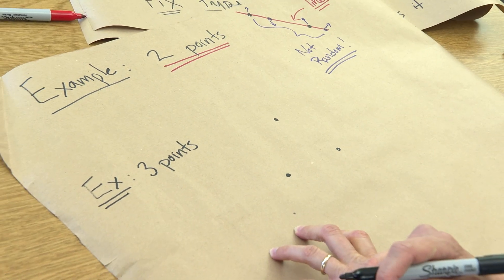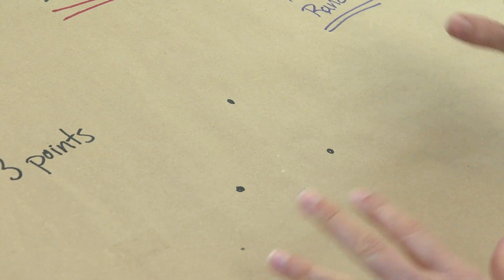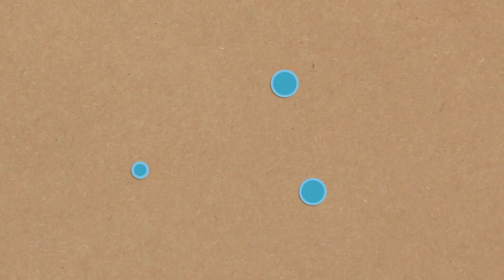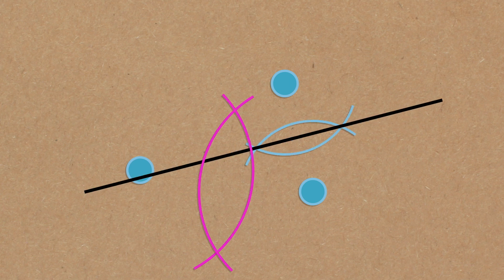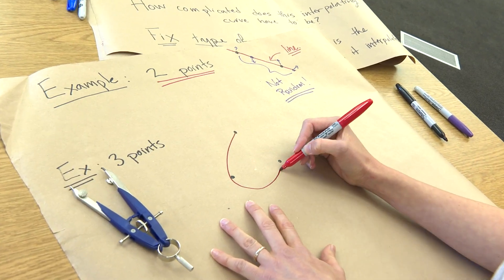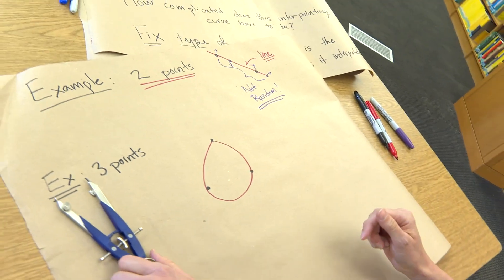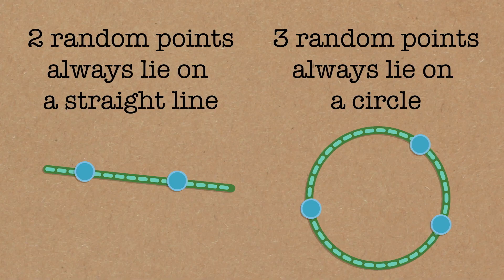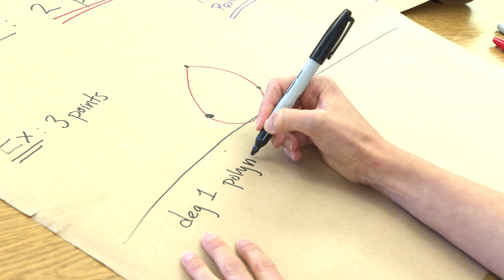Let's try three random points. What's the simplest curve that interpolates three points? A circle! These are classical results — Euclid knew a line interpolates two points and a circle interpolates three points. Euclid didn't have equations; he had synthetic constructions. If you have four random points, they won't lie on a circle, so three is the maximum for a circle.